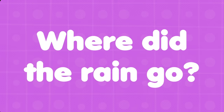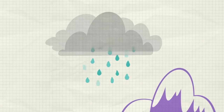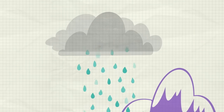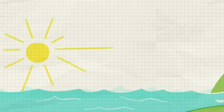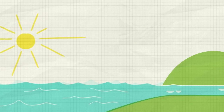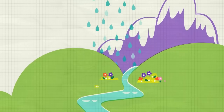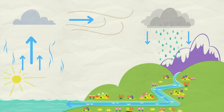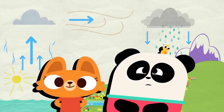Where did the rain go? Good question, Billy. Rain is part of the water cycle. The word cycle means circle. Some water on Earth travels in a circle — up into the air, moving with the wind, then down onto the Earth and back up again. I'm not sure. Not really.